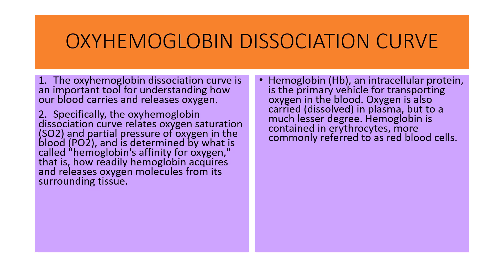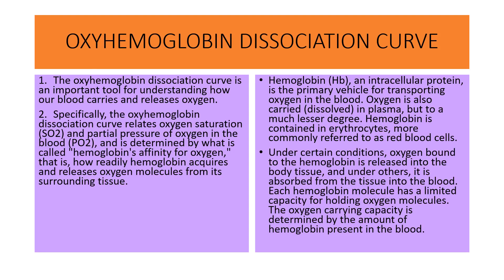Hemoglobin, an intracellular protein, is the primary vehicle for transporting oxygen in the blood. Oxygen is also carried dissolved in plasma in very small amounts. Hemoglobin is contained in RBCs, more commonly referred to as erythrocytes. Under certain conditions, oxygen bound to hemoglobin is released into the body tissues, and under others it is absorbed from tissues into the blood. Each hemoglobin molecule has a limited capacity for holding oxygen, and the oxygen carrying capacity is determined by the amount of hemoglobin present in the blood.